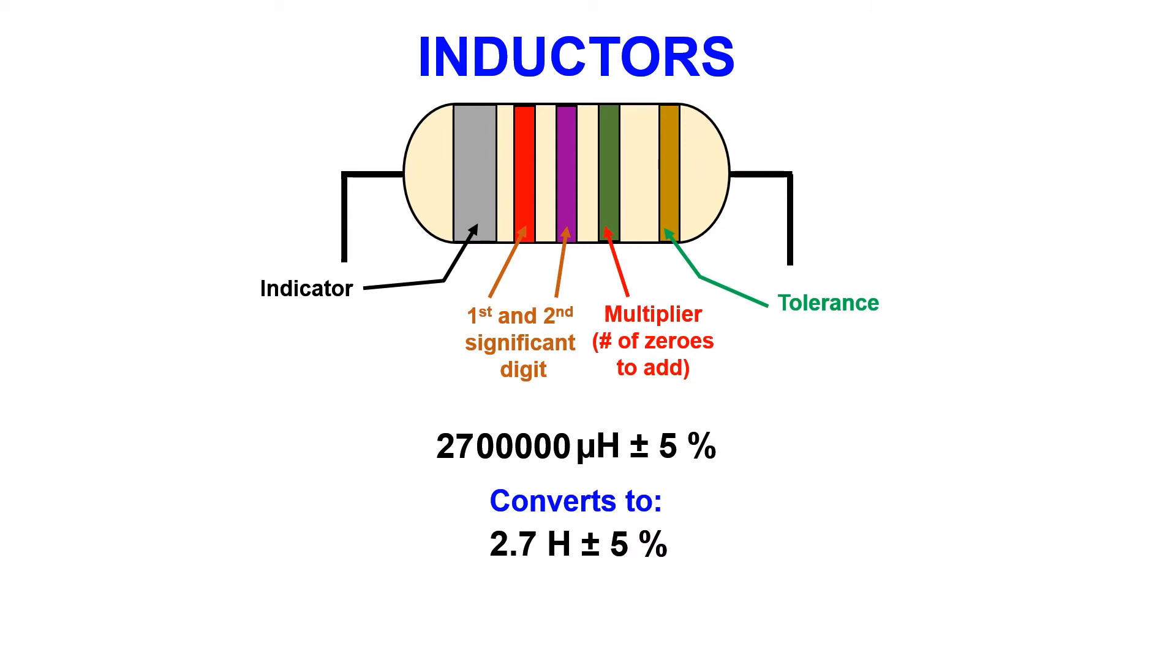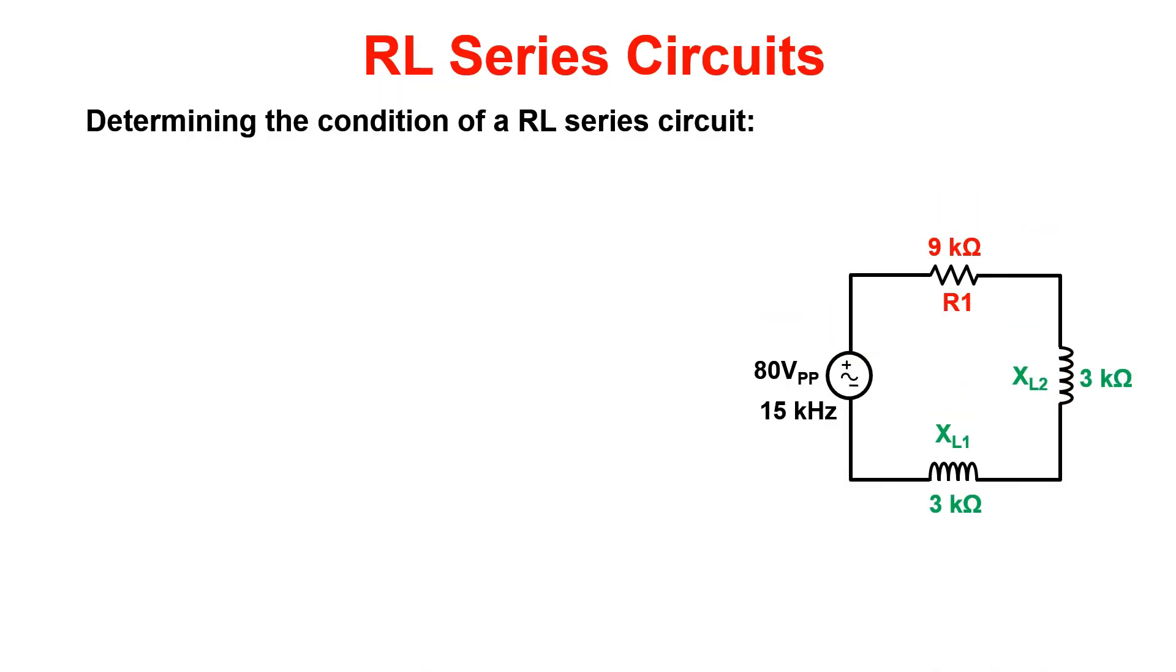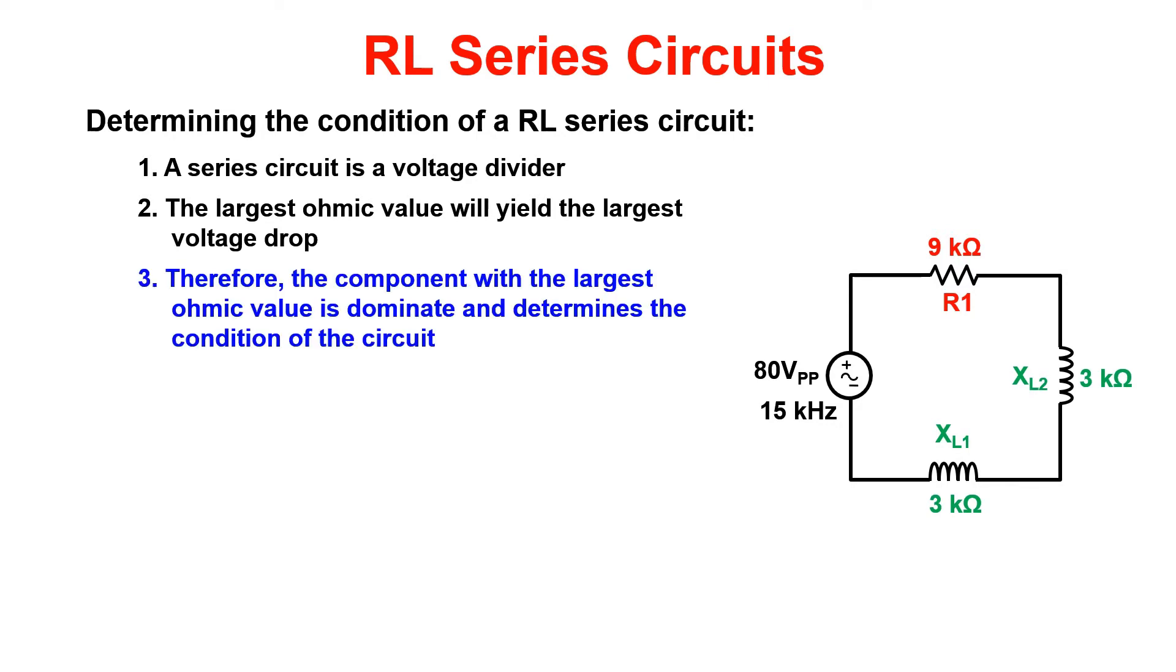We need to be able to determine which component in the circuit is dominant. If you recall when we went over series resistive circuits we called them voltage dividers. The largest ohmic value in a series circuit will yield the largest voltage drop. Therefore the largest value is dominant and determines what the circuit is.